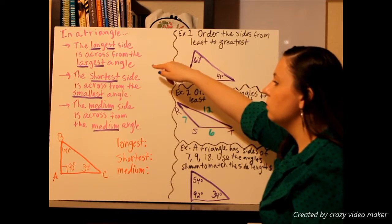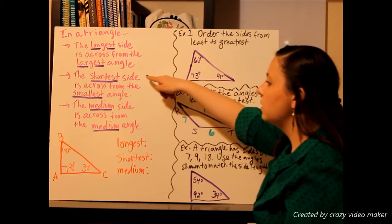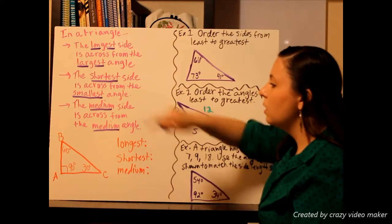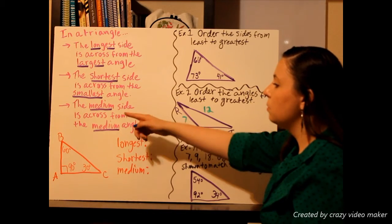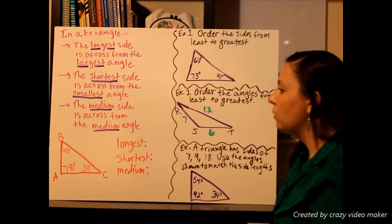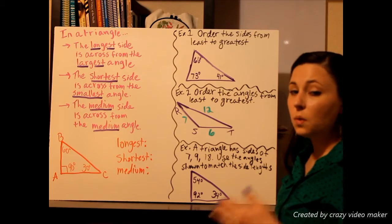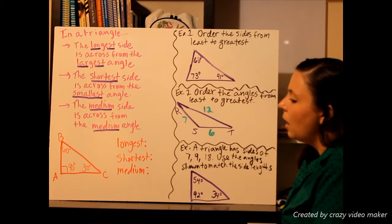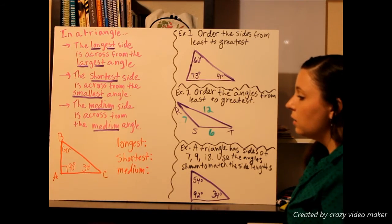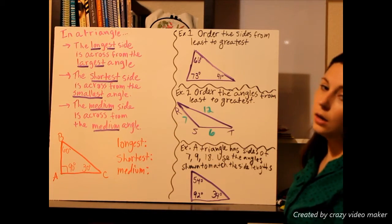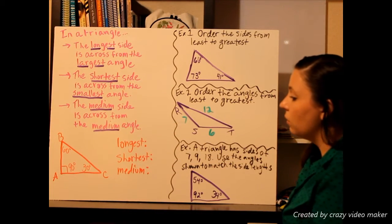So it's the same thing with the angles and the sides in the triangle: longest side pairs with the largest angle, shortest side is across from the smallest angle, and medium side is across from the medium angle. When I say across, I mean directly on the opposite side of the triangle.